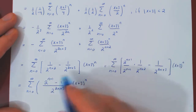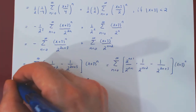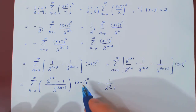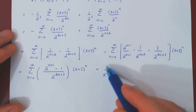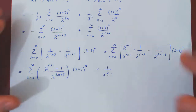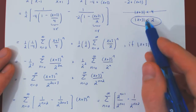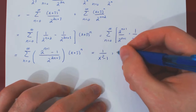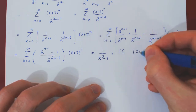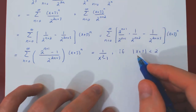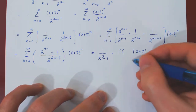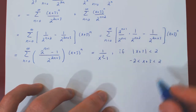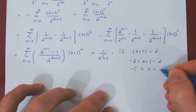This is the Taylor series of 1 over x squared minus 1, centered at negative 3. The equality between the function and its Taylor series is only valid when the absolute value of (x plus 3) is less than 2, which means x must lie between negative 5 and negative 1.